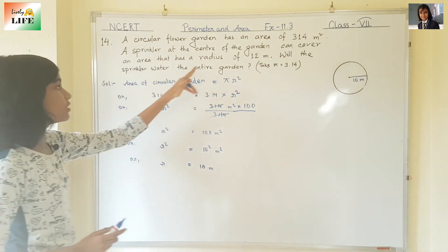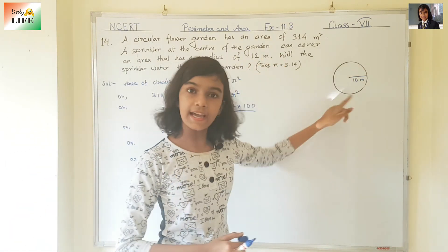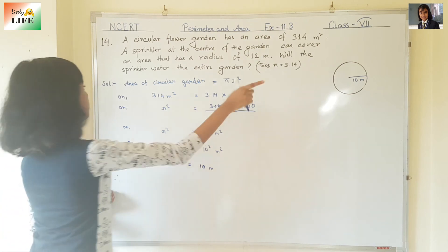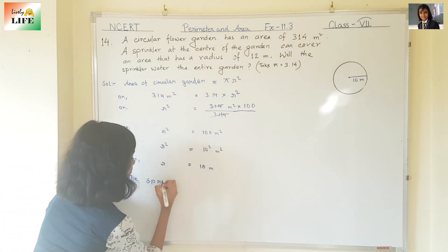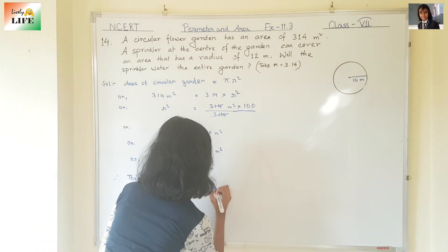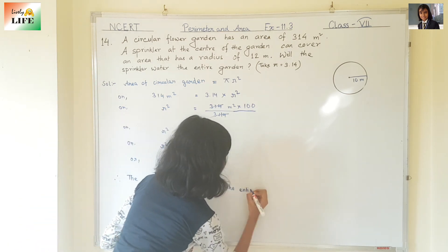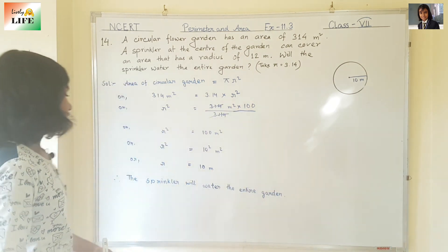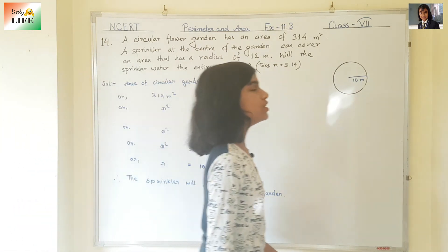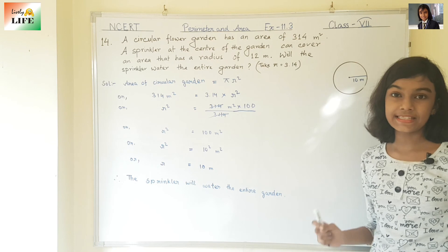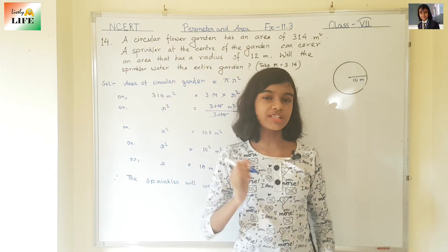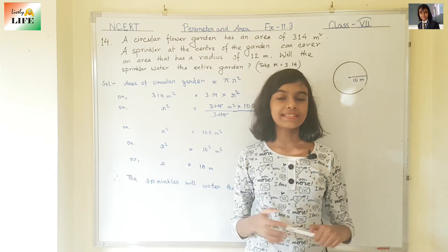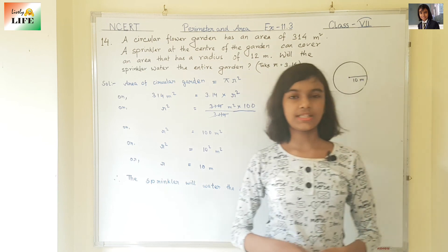The question is: will the sprinkler water the entire garden? Yes, the sprinkler will water the entire garden, because 10 is less than 12. Therefore, the sprinkler will water the entire garden. With this, we have completed question number 14 of exercise 11.3. In the next video, I am going to be back with question number 15. If you like this video, click on the like button and stay with me. Please click on subscribe button. Thank you.